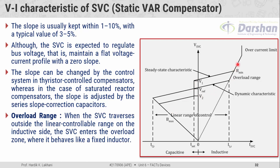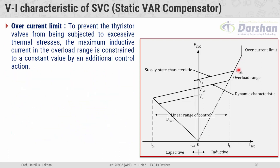The overload range is the portion of the characteristic defined when the SVC traverses outside the linear controllable range on the inductive side. When the SVC goes beyond this line on the inductive side, it is said that the SVC enters into the overload zone, where the compensator behaves like a fixed inductor. In this region, we can no longer change the impedance offered by the SVC for compensation purposes.